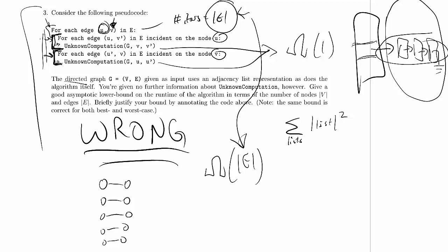Could it be E squared? Yeah, sure. We could have a complete graph. In a complete graph, for every vertex, we're going to run this loop V minus one times, and we'll have E edges. So that'll be actually E times V.